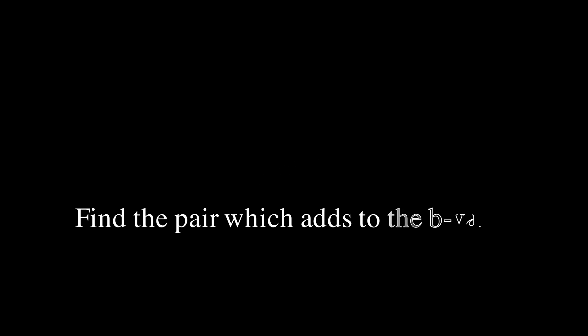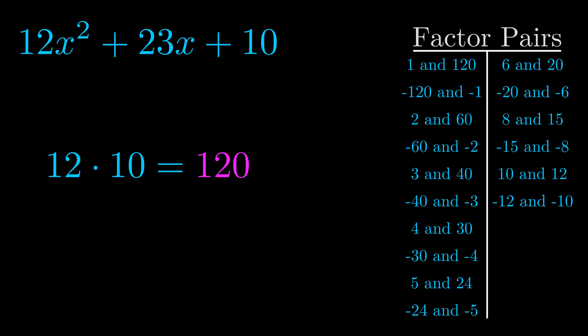The b value is the coefficient on the x term. That's the middle term, the one that we haven't done anything with yet. And really this is the only factor pair that we need.